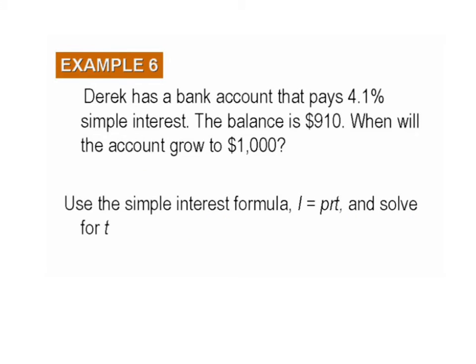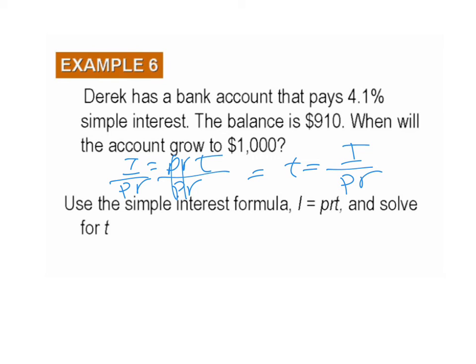Here's example six. Derek has a bank account that pays 4.1% simple interest and the balance is $9,000. When will the account grow to $10,000? Here what they want to know is time. So we take I equals PRT and divide both sides by PR. These cancel out, and what we get is T equals I divided by PR. So we plug in 90 divided by $1,000 times 0.041, and what you get for time is 2.2 years.